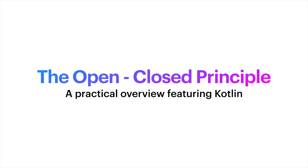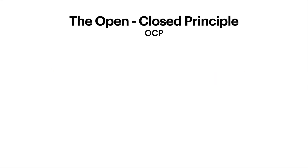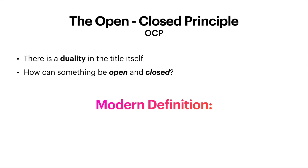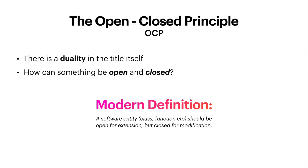The open-closed principle has one of the most confusing names I have seen. Whenever I read open-closed, I cannot help but notice the duality in the title itself. How can something be open yet closed? The modern definition adds little to our understanding out of context. It reads: a software entity should be open for extension, but closed for modification. This is confusing, but the key is the out-of-context part.